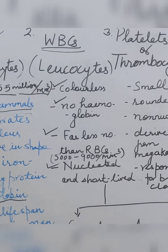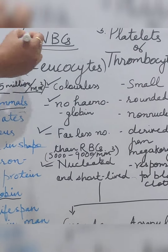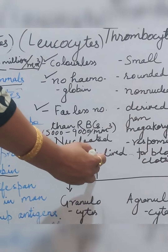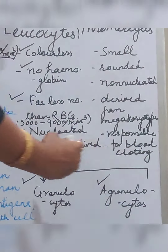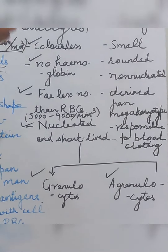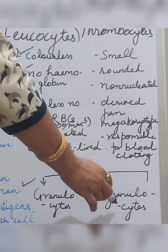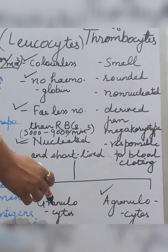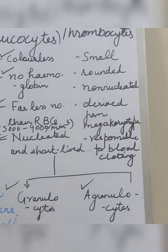When any antigen enters the body, white blood cells work against it. We divide WBCs into two categories: granulocytes and agranulocytes. As the name suggests, granulocytes have cytoplasmic granules in these cells, while agranulocytes have no cytoplasmic granules. Both of these are further divided into subcategories.